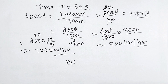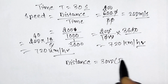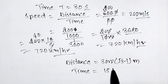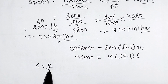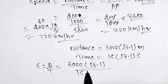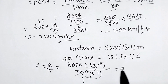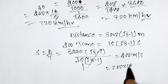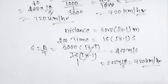We can also verify using Question R values: distance = 3000(√3 − 1) meters and time = 15(√3 − 1) seconds. Speed = 3000(√3 − 1) / 15(√3 − 1). The (√3 − 1) cancels out, giving 3000/15 = 200 meters per second. Converting: 200 × (18/5) = 720 km/h. Both methods give the same answer — 720 km/h.